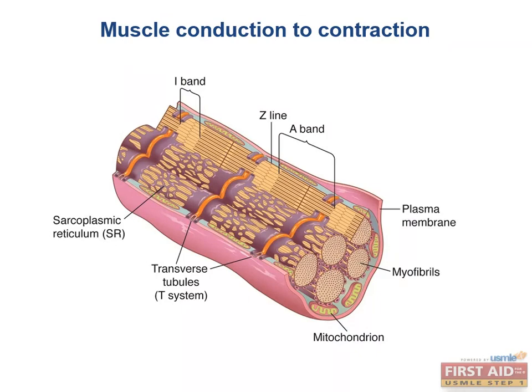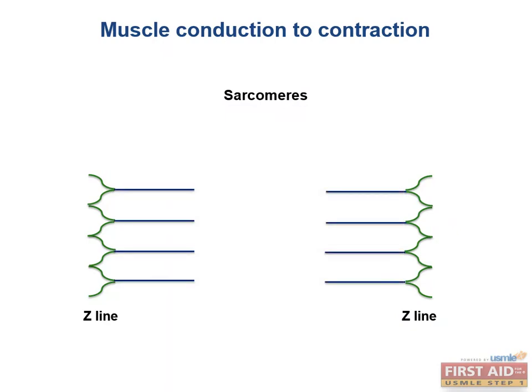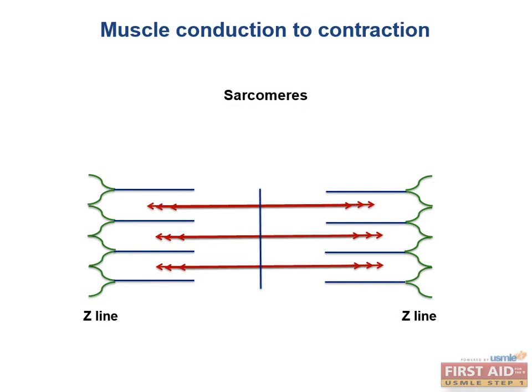Let's spend some time on the sarcomere, because this will definitely appear on your Step 1. In general, the sarcomere extends from Z line to Z line. You can remember that Z is at the end of the sarcomere and also at the end of the alphabet. Off of the Z line, actin molecules project in towards the M line. Off the M line, you'll notice thicker lines. What are these thicker lines? Myosin, extending towards the Z lines.